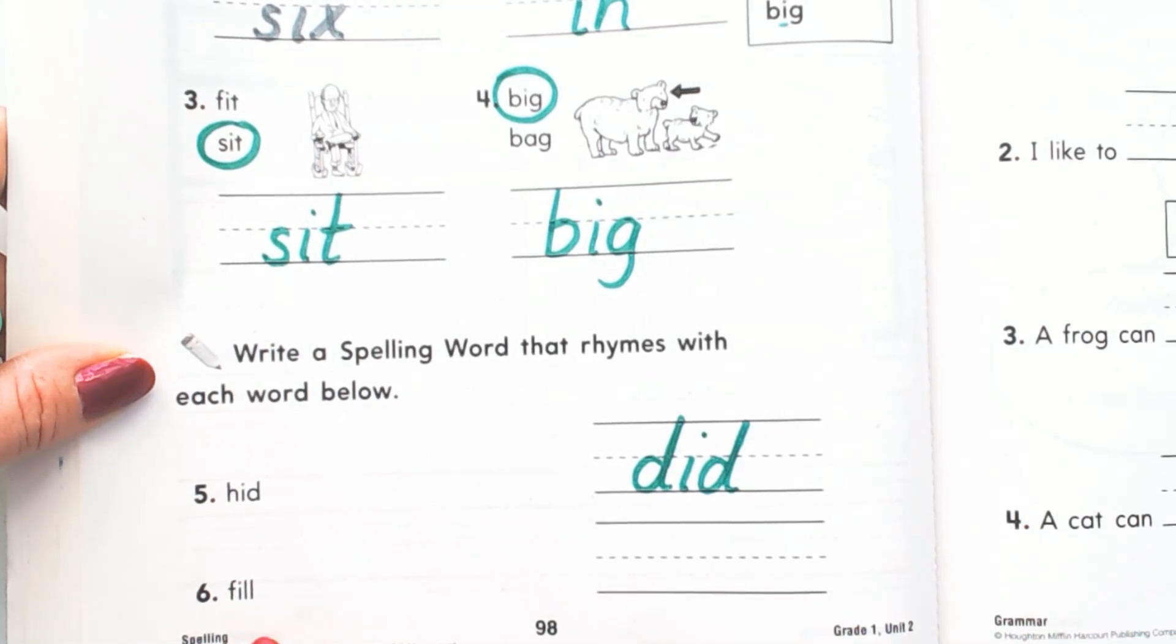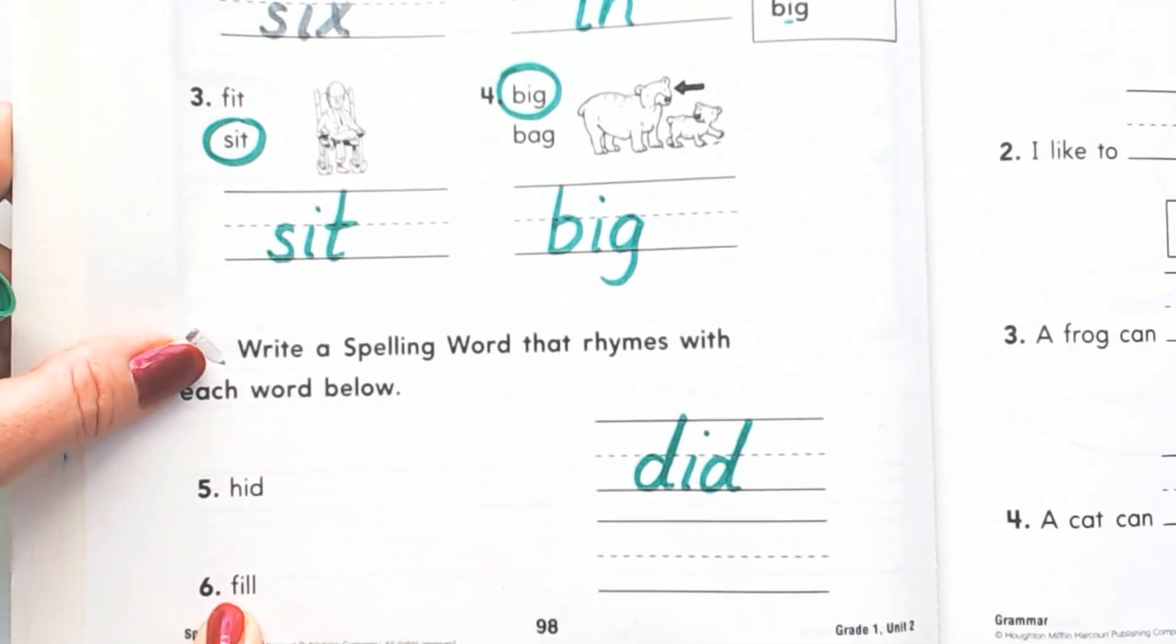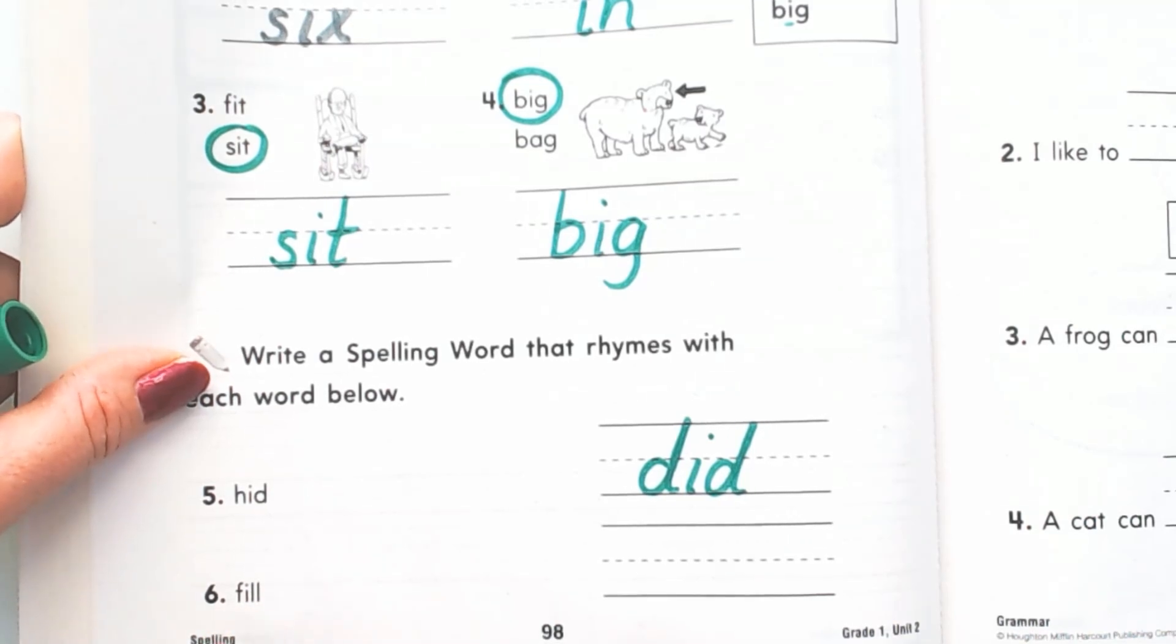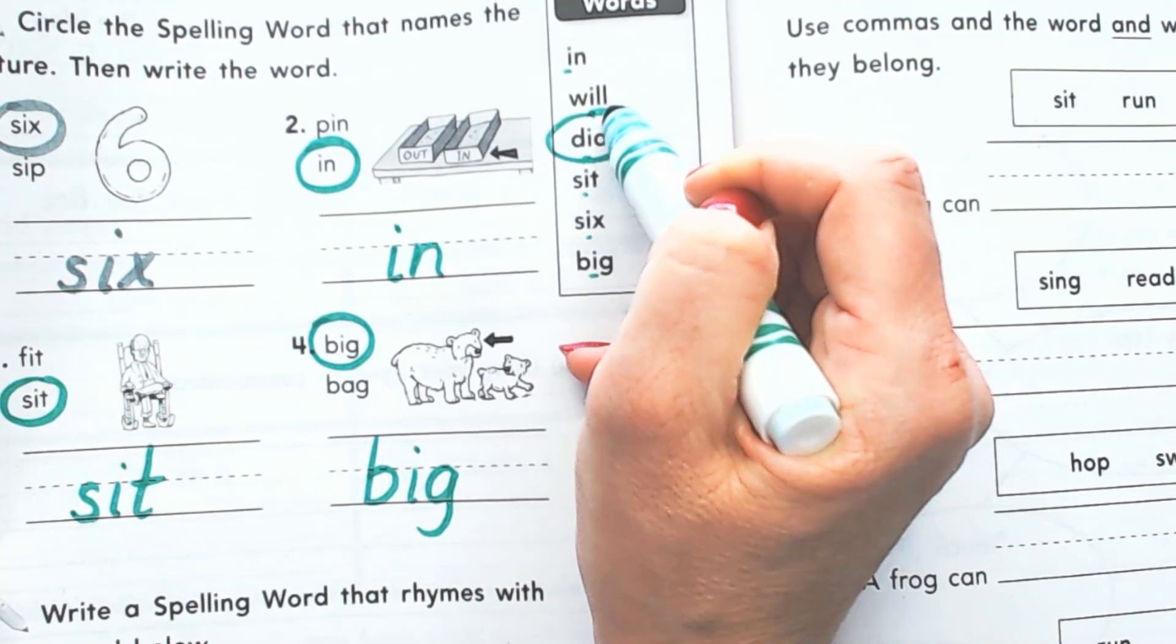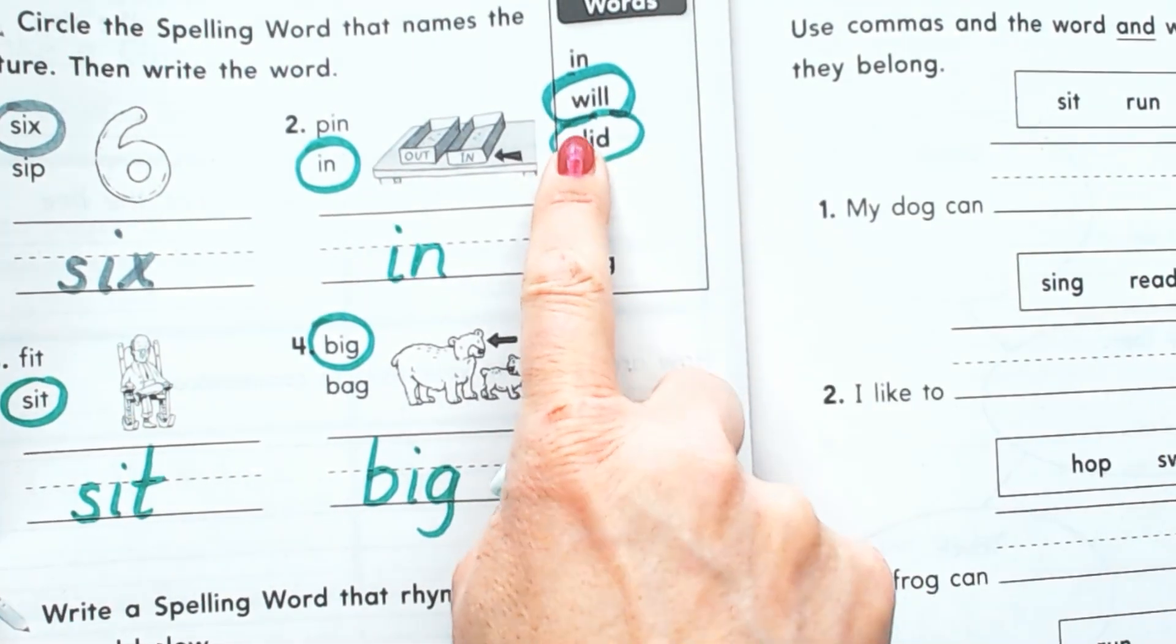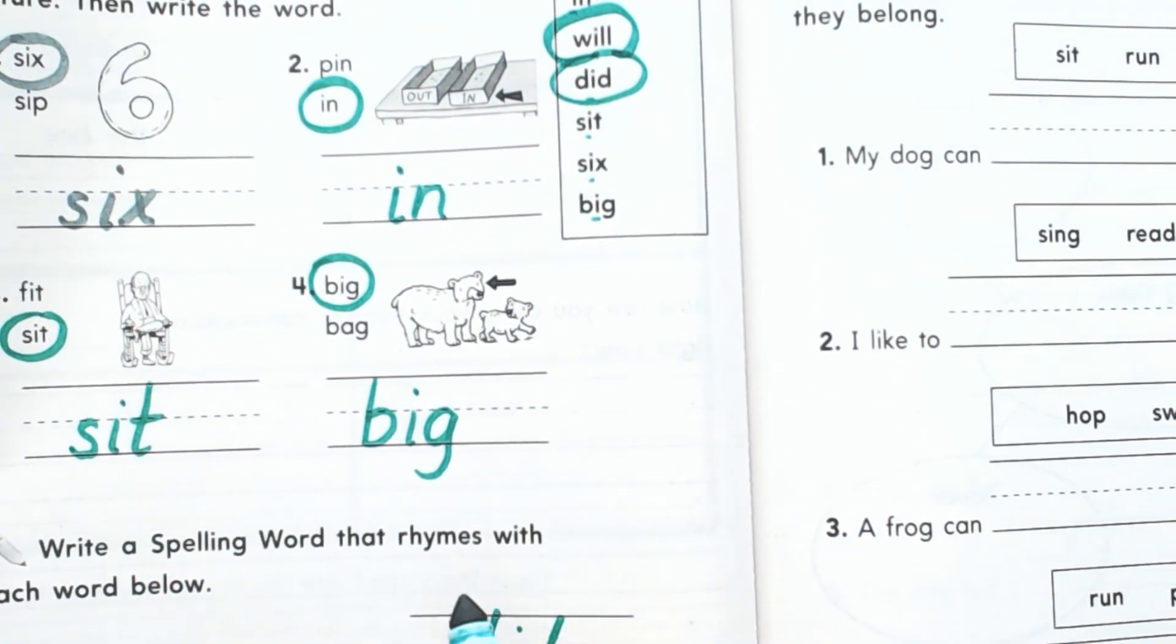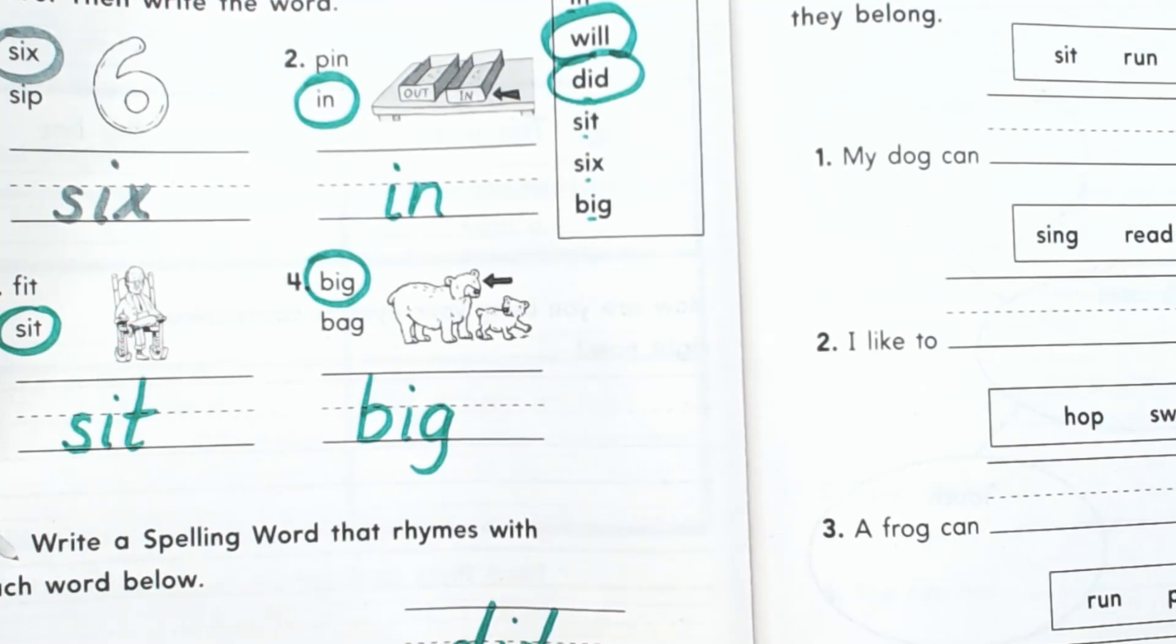Next one says 'fill' and it ends with I-L-L. We're not using the beginning sound when we're trying to find a word family. We're only looking past the beginning sound to the ending sounds. And that's I-L-L. So I'm looking up here for I-L-L, and there it is. That spelling word has two L's. It's 'will.' Fill rhymes with will.